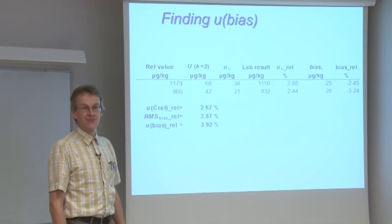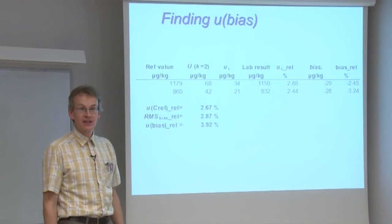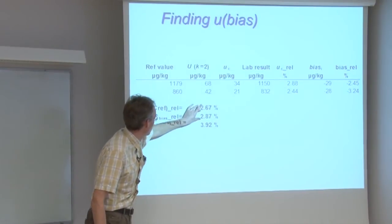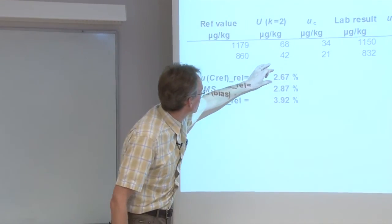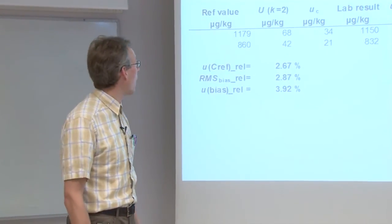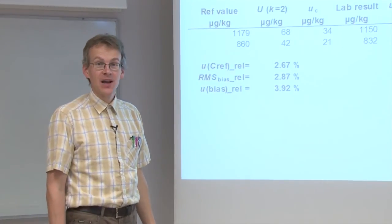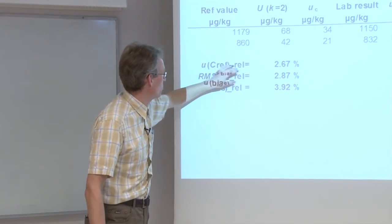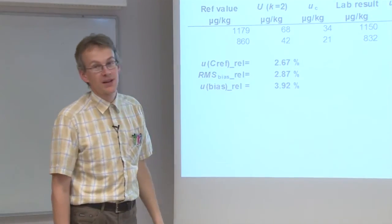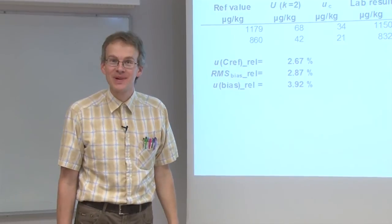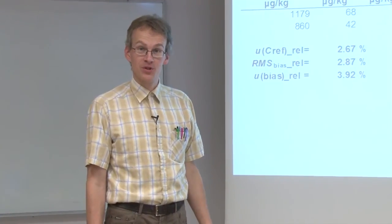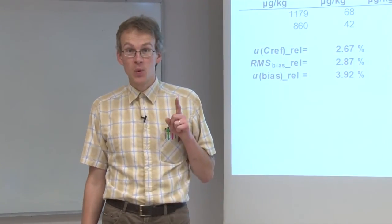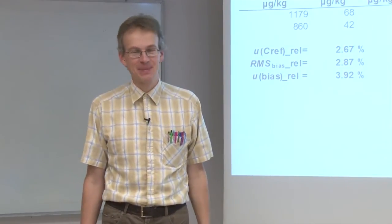The bias data just calculated are presented in this slide. Looking at the data, we see that the bias is composed of two components — the uncertainty of the reference values and the RMS bias — and in this case both components are at rather similar levels, contributing quite similarly to the bias uncertainty. It is more usual for the RMS bias component to be larger than UCref, but here the difference is quite small, meaning the laboratory has done a good job in determining acrylamide in these reference materials. Now that we have both the reproducibility and bias components, we can calculate the combined standard uncertainty and the expanded uncertainty.